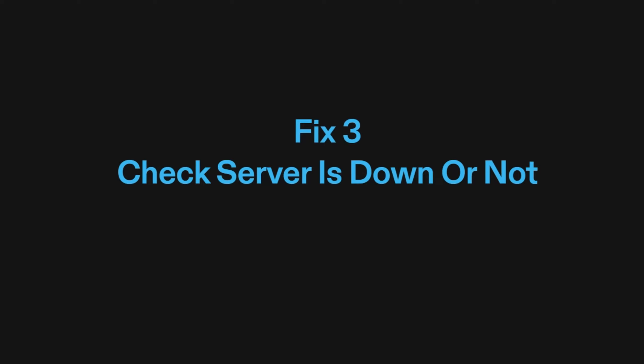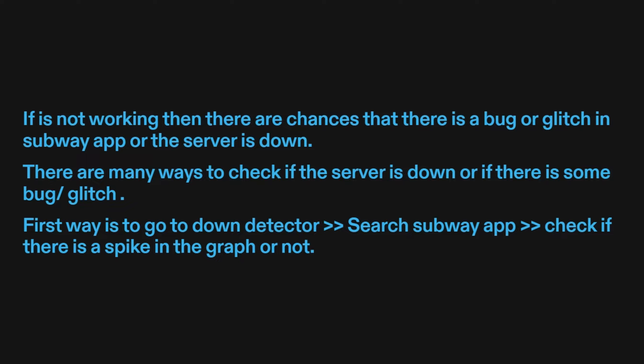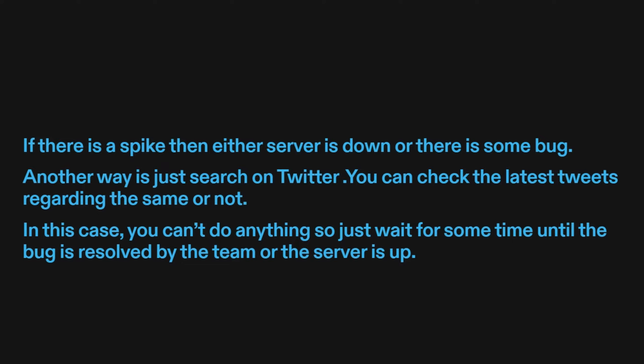Fix three: check if the server is down or not. If it's not working, there are chances that there is a bug or glitch in the Subway app or the server is down. There are many ways to check this. First, go to Downdetector and search Subway app. Check if there is a spike in the graph. If there is a spike, then either the server is down or there is some bug.